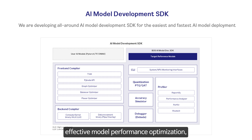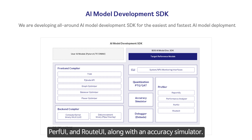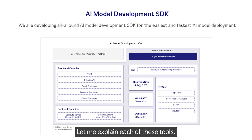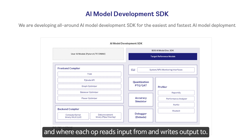For efficient and effective model performance optimization, we provide four performance profiling tools: Reportify, Performance Analyzer, PerfUI, and RouteUI, along with an accuracy simulator. Reportify is a visualization tool that shows how optimally all operators are placed on a grid of computing cores and where they read input from and write output to. Performance Analyzer supports performance analysis of the model to identify bottlenecks and optimization opportunities.